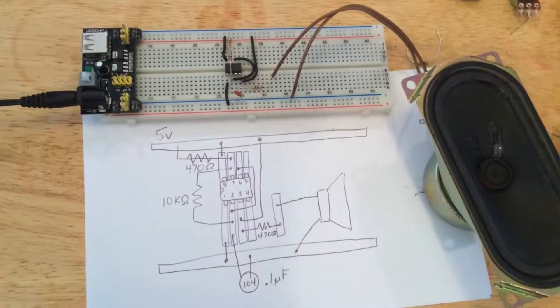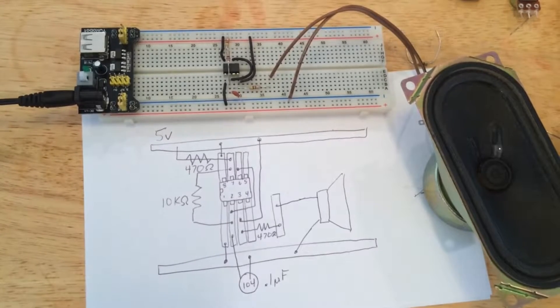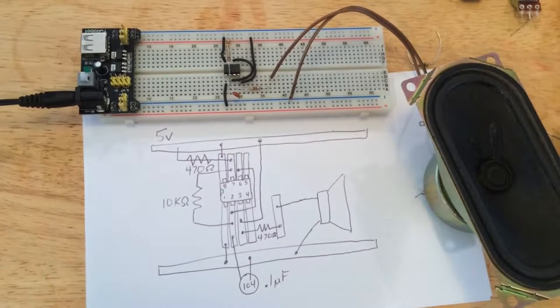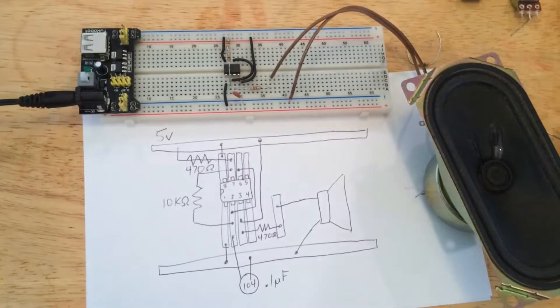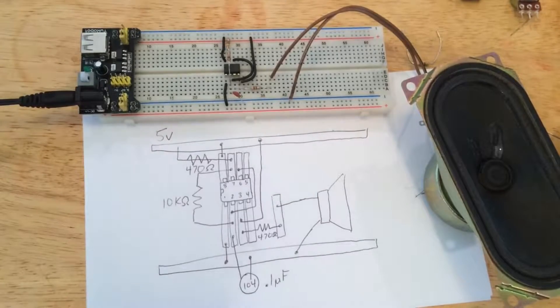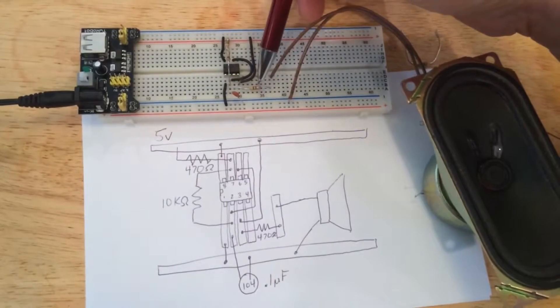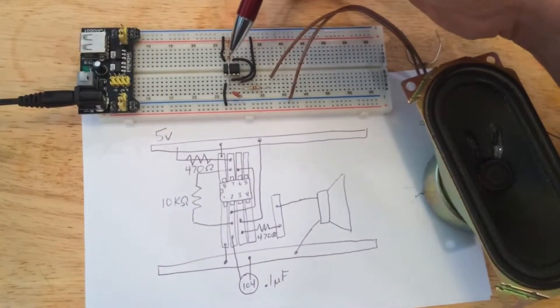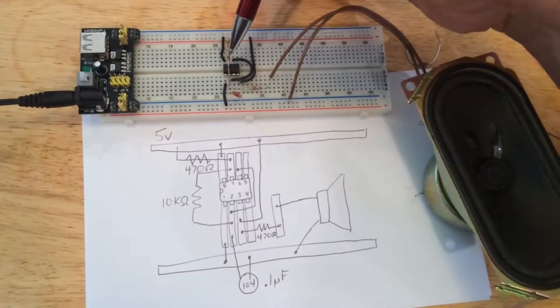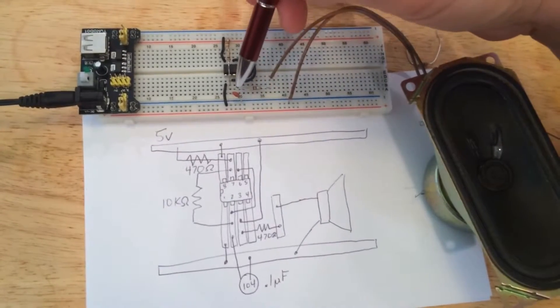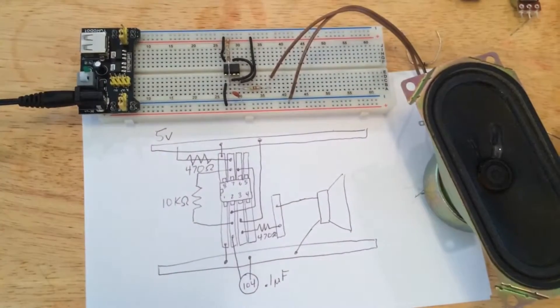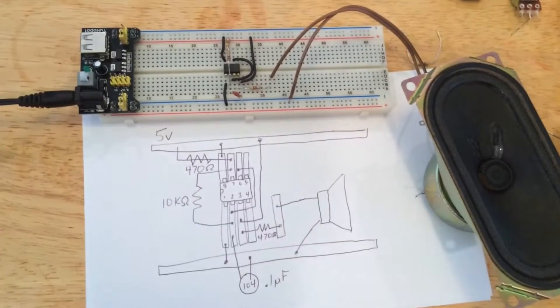Okay, I built a pretty simple 555 timer square wave generator. I have three resistors: two 470 ohm resistors, one 10k ohm resistor, and a 104 capacitor. It works pretty well.